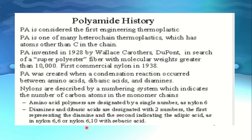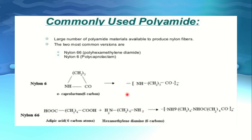Diamines and dibasic acids are designated with two numbers — the first representing the diamine and the second indicating the acid, as in nylon 6,6 or nylon 6,10 with sebacic acid. That is the history of polyamides. Now, commonly used polyamides: the first is the large number of polyamide materials available to produce nylon fibers. The two most common versions are nylon 6,6, also called polyhexamethylene diamide.